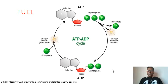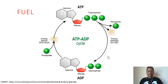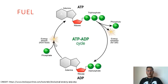Active transport is called active because this type of transport requires energy to move molecules, and energy we get through ATP. ATP is the most common source of energy for active transport. Here is a picture where ATP cycling is shown. ATP loses a phosphate molecule releasing energy to become ADP. ADP again gains a phosphate molecule through energy absorption and forms ATP. It is a cyclical phenomenon.